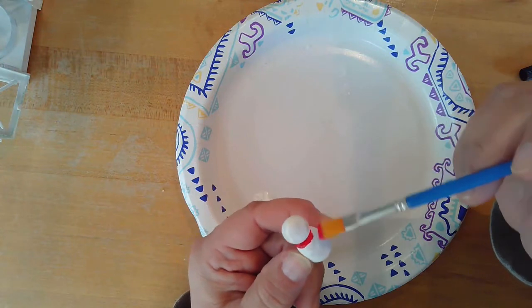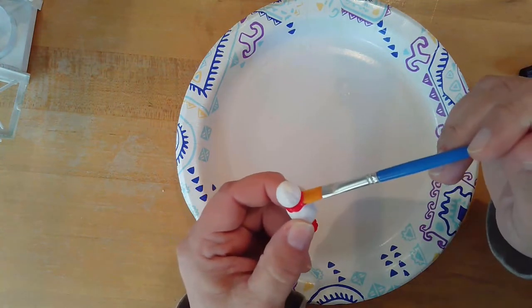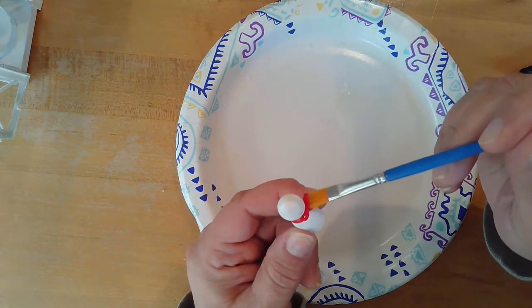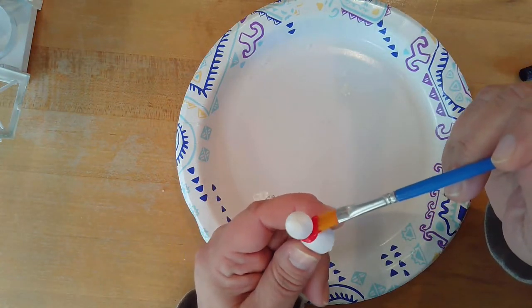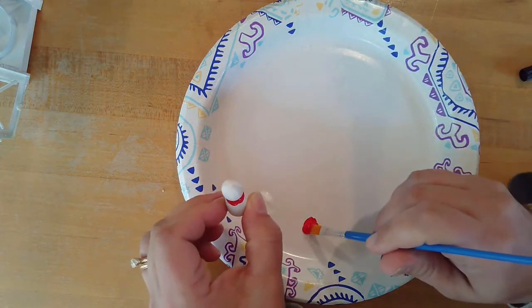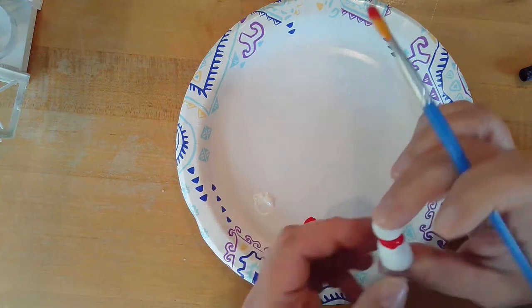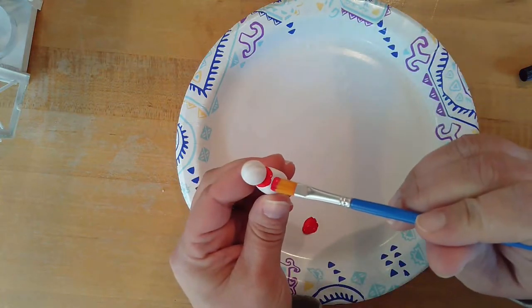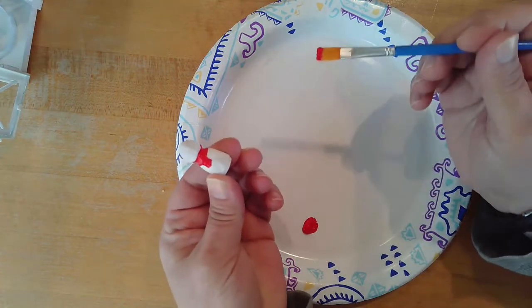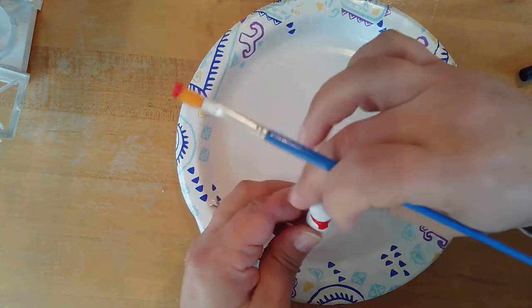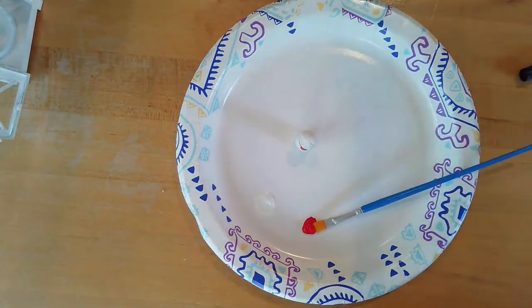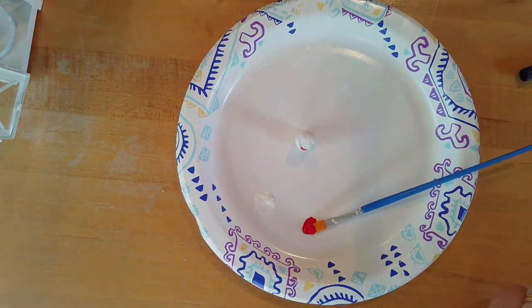Just using the edge of the brush. Once you've gone all the way around, you can add the dangling part of the scarf. About halfway down the snowman's side. Go like that. Let it dry. Make sure you clean your brush. And then you can do the face.